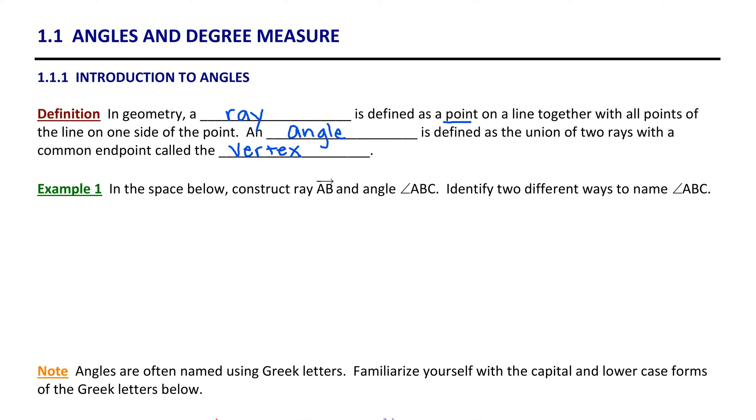So starting with ray AB, notice the arrow points in one direction. It goes from A to B. So when we construct ray AB, we're going to indicate direction from point A to and through point B. So this is an illustration of what we would call ray AB. Order is important when we name a ray.